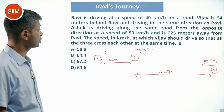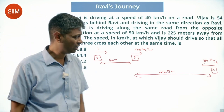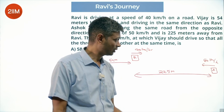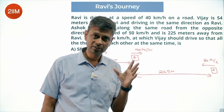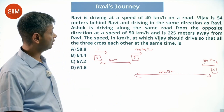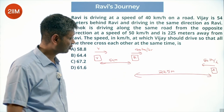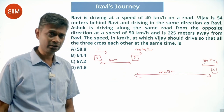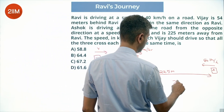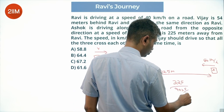The question asks for the speed at which Vijay should drive so that all three cross over each other at the same point. Using relative distance divided by relative speed, we get the time Ashok needs to cross Ravi. The relative speed is 90 kilometers per hour and the distance is 225 meters, so the time taken is 225 divided by 90 multiplied by 5/18 seconds.